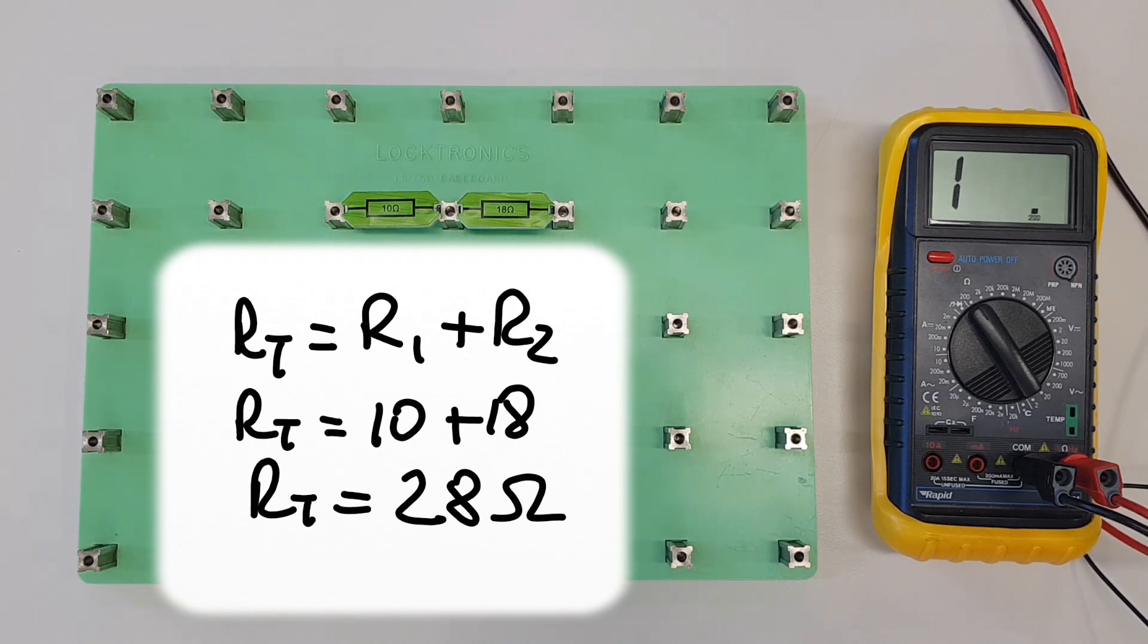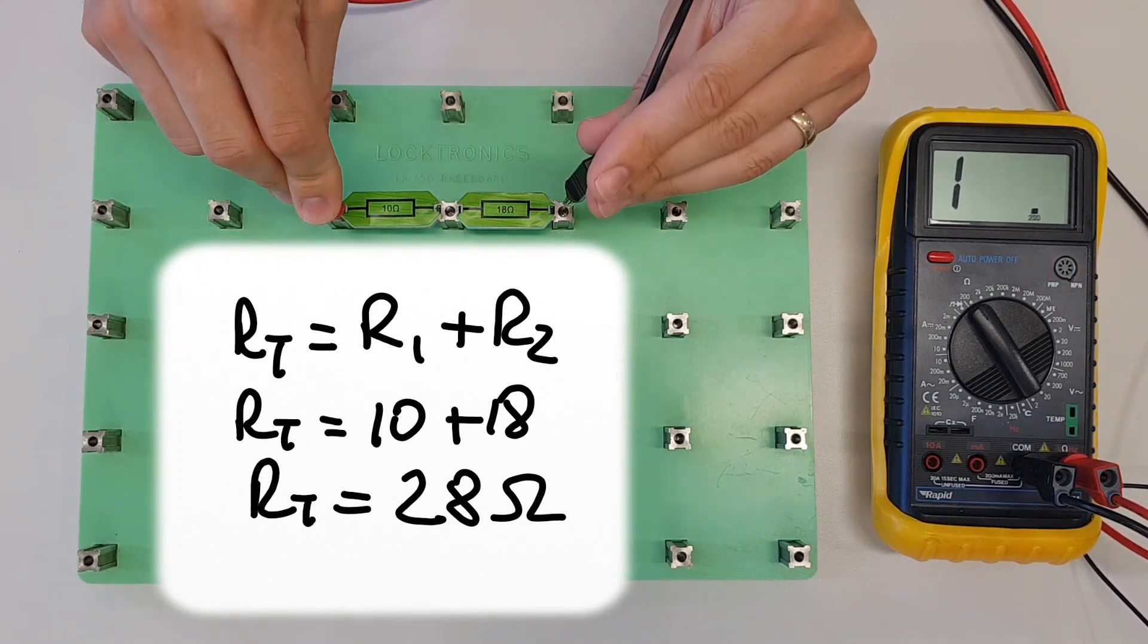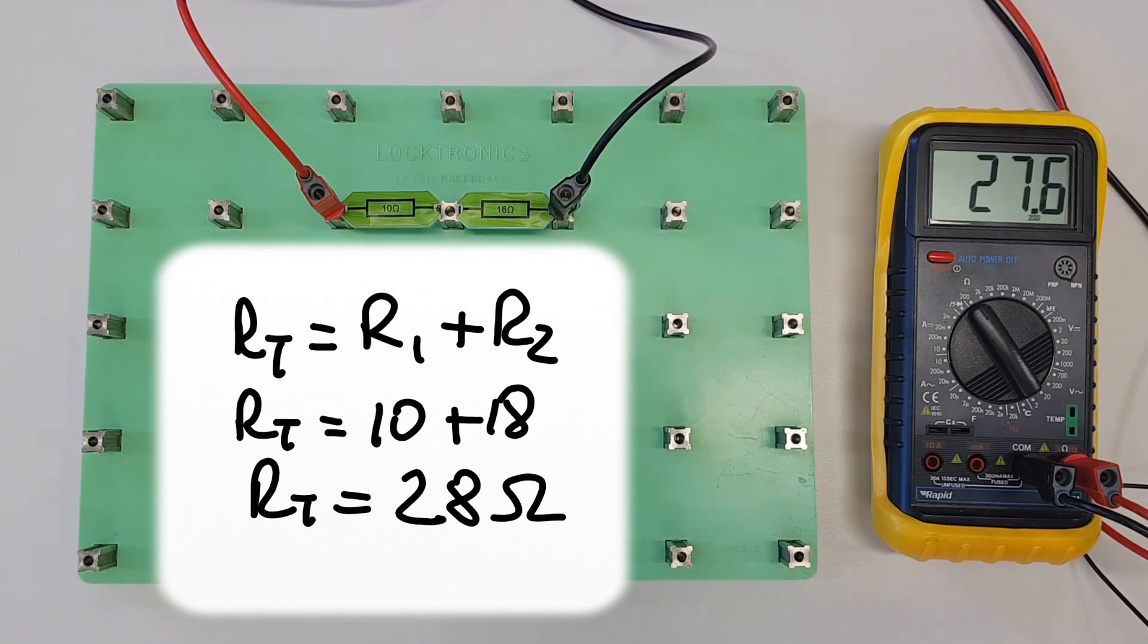Let's measure the resistance across these two resistors and see if we've got 28 ohms. We'll plug one lead in that side and one lead in that side, and we're coming out at 27.8. That might even climb a little bit more, but we're very acceptably close to 28 ohms there, so we can see that the maths continues to work.